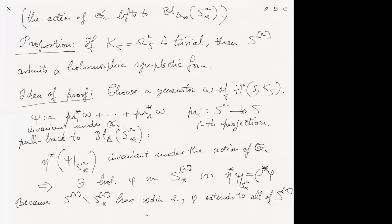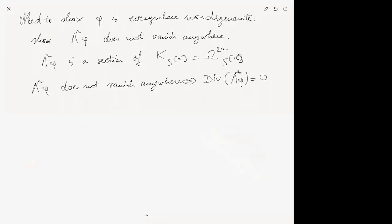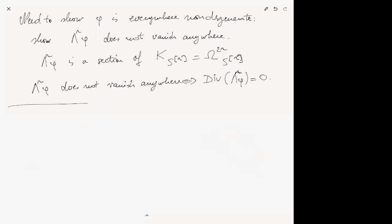What's interesting about the Hilbert scheme is that it's going to be irreducible holomorphic symplectic — meaning up to a constant multiple, there is only one holomorphic two-form on this manifold.